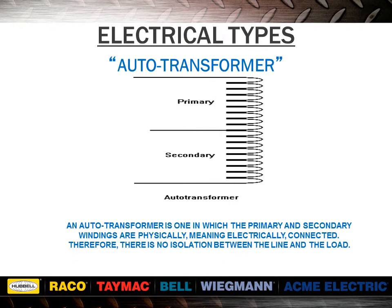An autotransformer is one in which the primary and secondary windings are physically, meaning electrically, connected. Therefore, there is no isolation between the line and the load. Autotransformers are more economical than comparable isolation units. Autotransformers should only be used where isolation of the load is not required. The most common application is for single-phase and three-phase standard AC motors. Units manufactured as autotransformers must have the word auto on the nameplate.